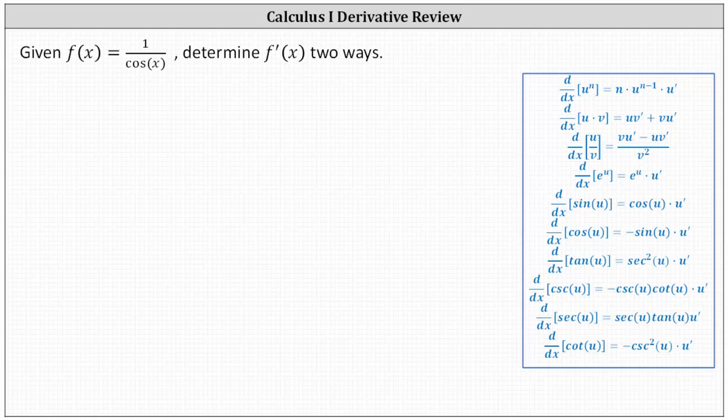One way is to use our trig identities and recognize that one over cosine x equals secant x. And then we can write f of x equals one over cosine x as secant x.